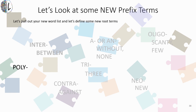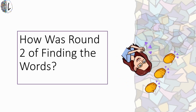Last for the new prefixes, we have 'poly' — P-O-L-Y. This refers to being many, so having multiples of something, a large quantity. How did you do on round two of finding those words? Hopefully you found everything and you're starting to digest and memorize some of these terms, because we're about to use them to build some words.